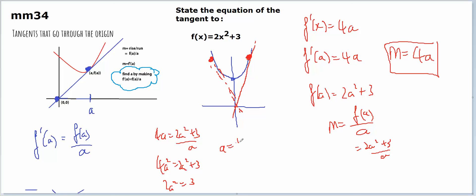a will equal plus or minus the square root of 3 on 2, which means the gradient will be 4 times plus or minus the square root of 3 on 2, which is 4 root 3 on 2 times root 2 on root 2, which gives you 4 root 6 on 2 or 2 root 6.